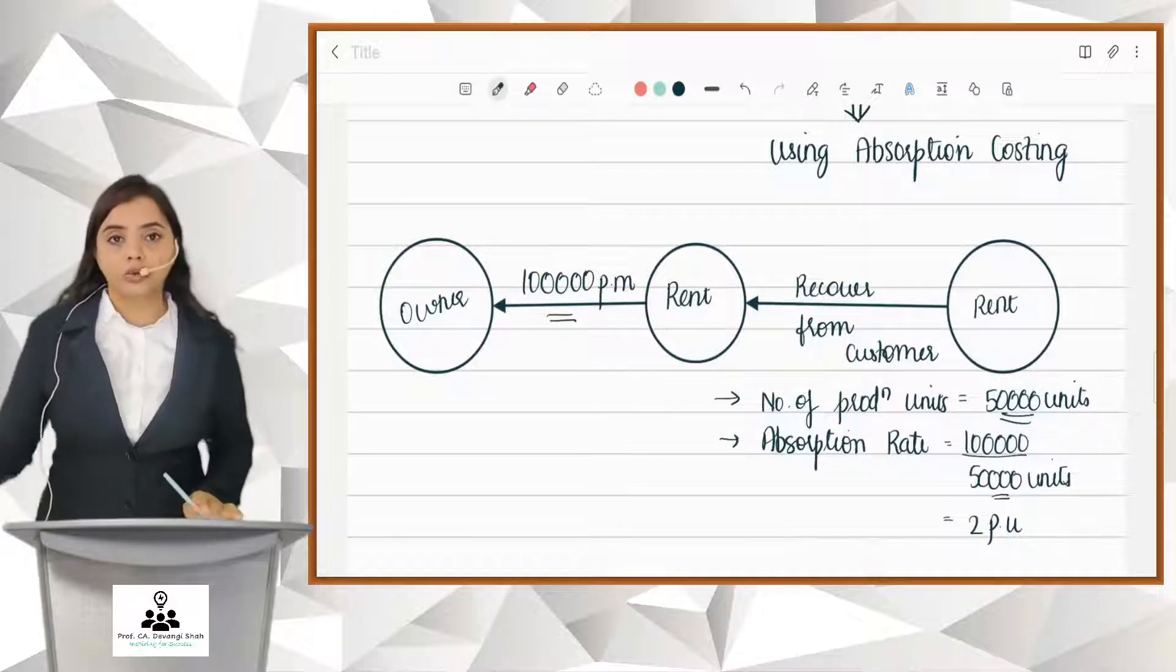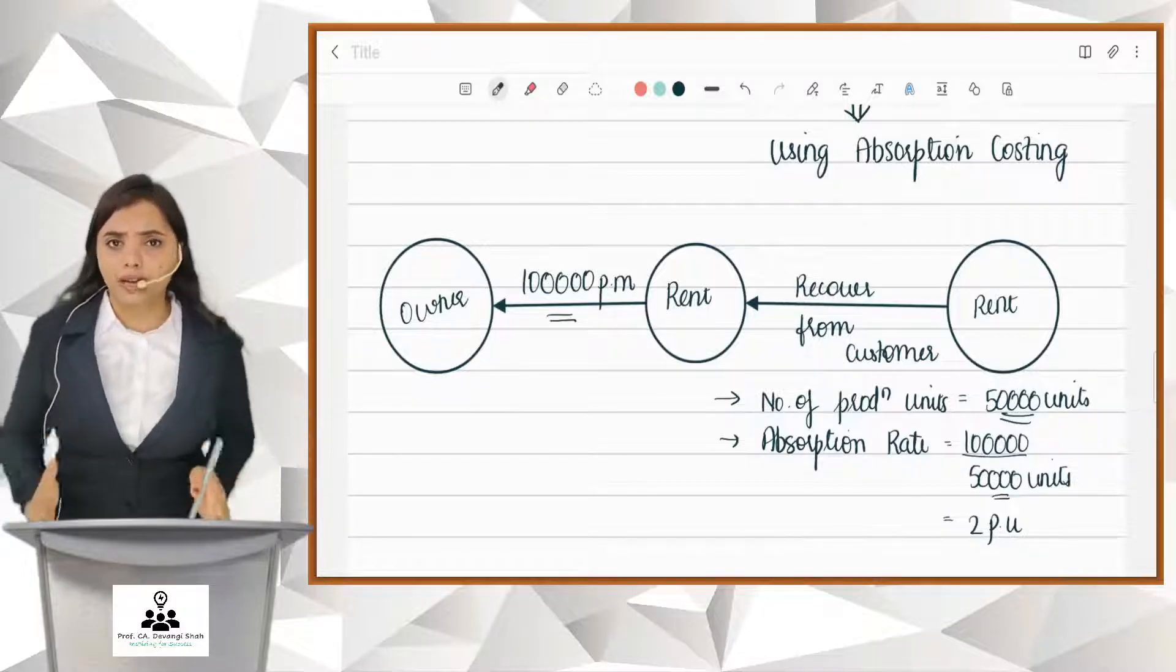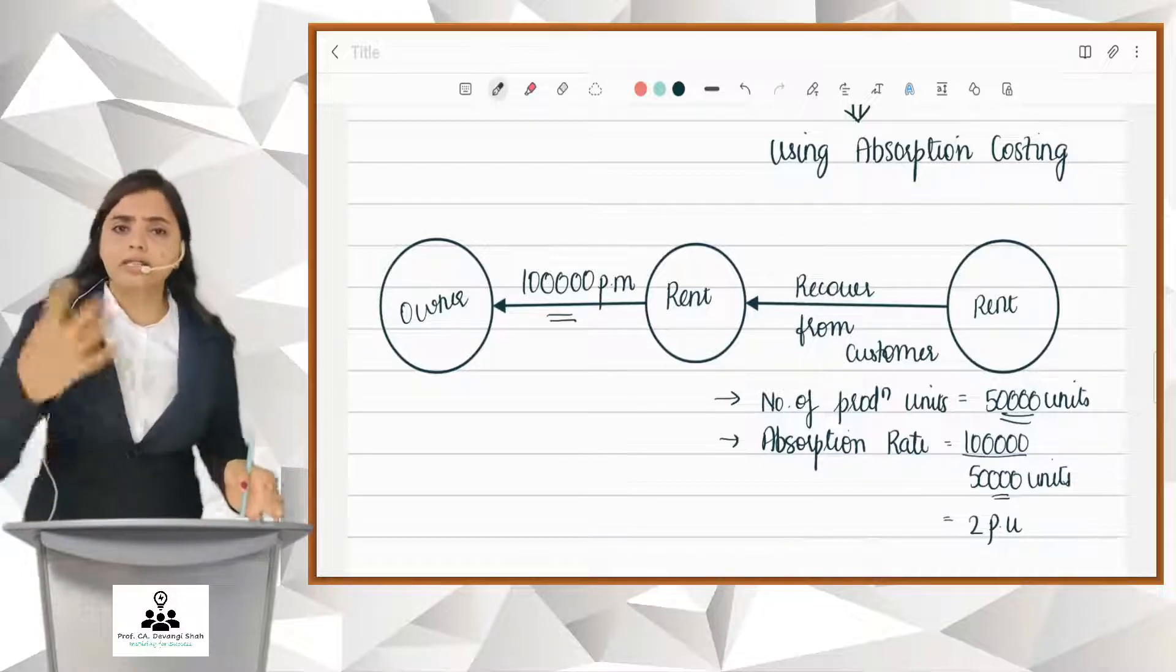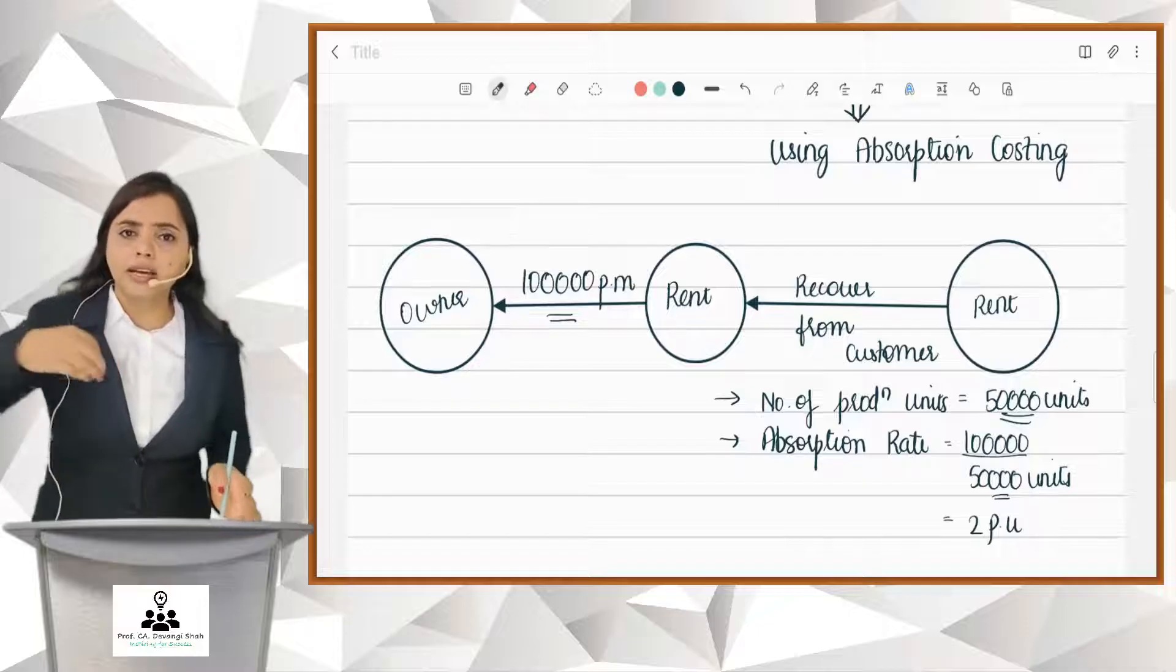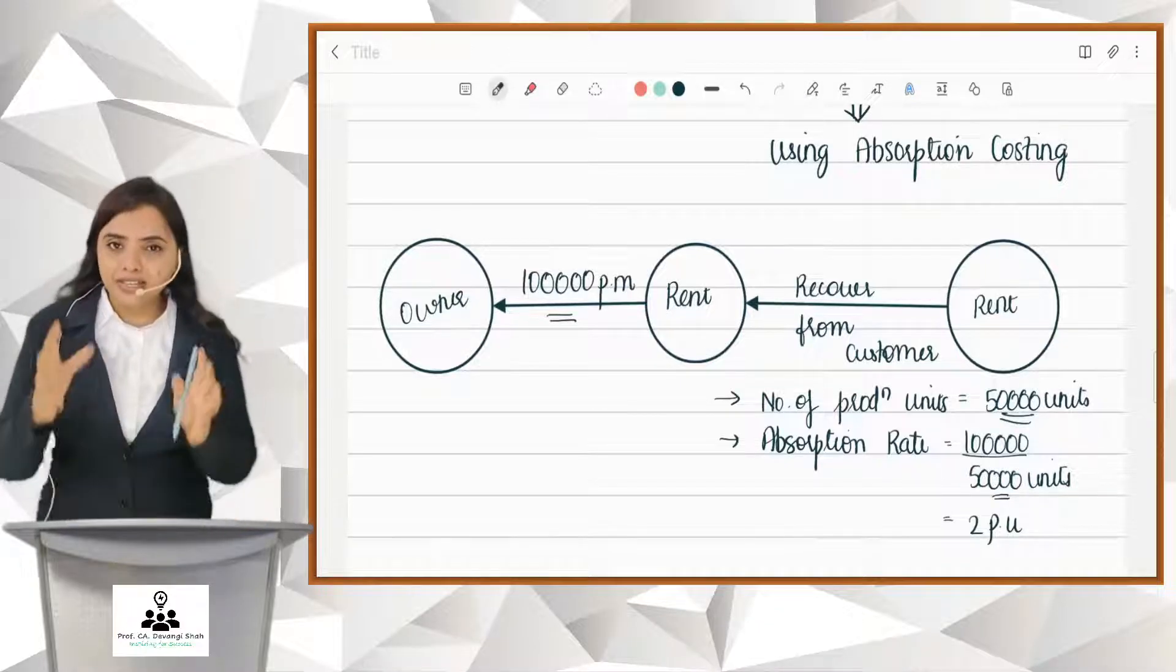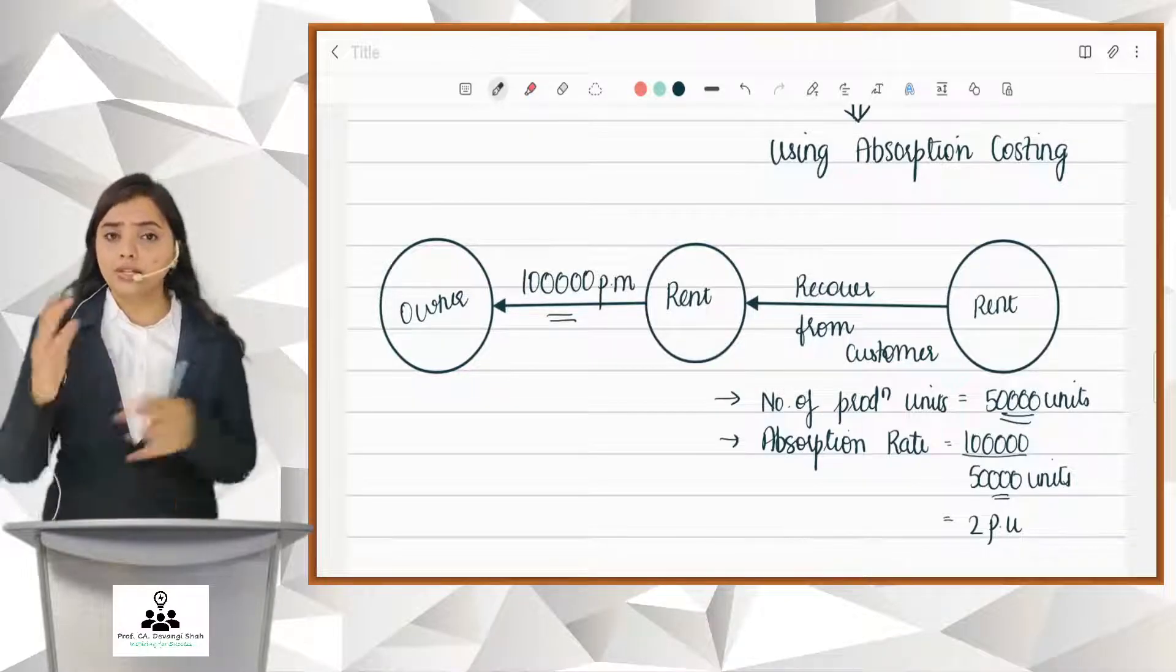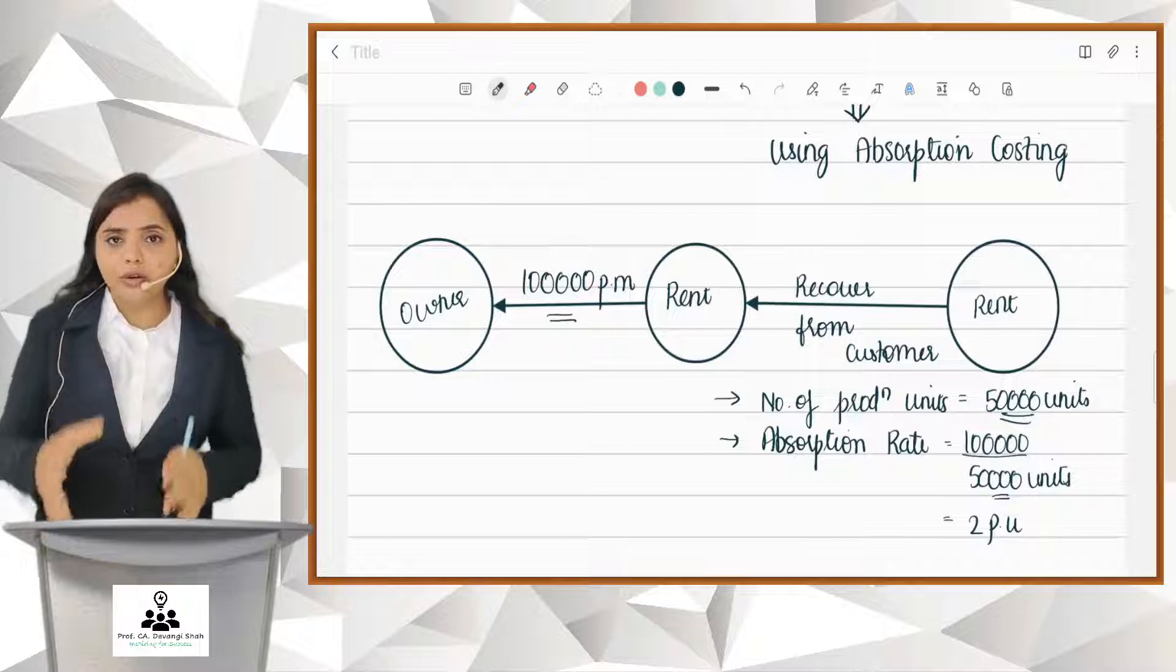Two rupees will be recovered from every unit that will be produced and sold, and this is how the full rent amount will be recovered. Every unit will help us to recover two rupees. And friends, this is absorption costing which converts all your fixed overheads into variable to find out how the cost is to be covered from the customer.